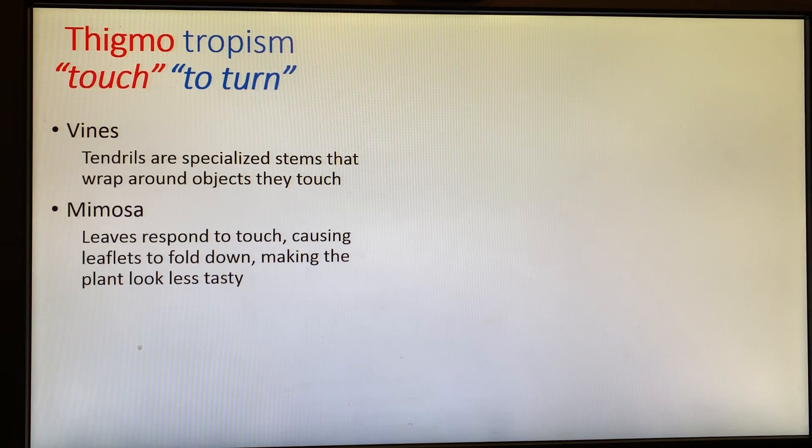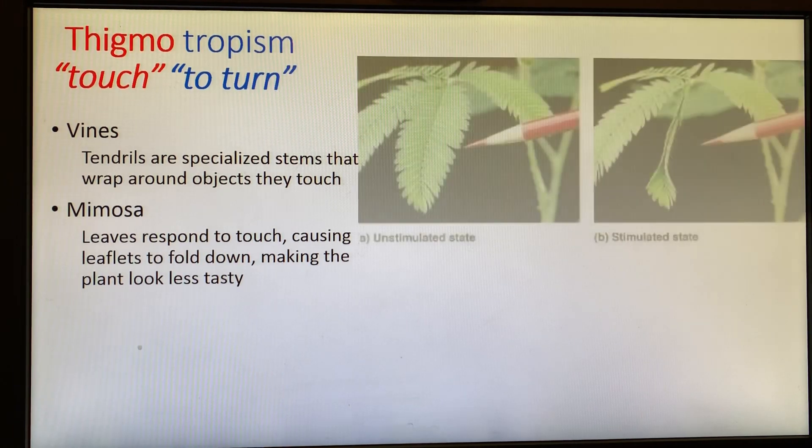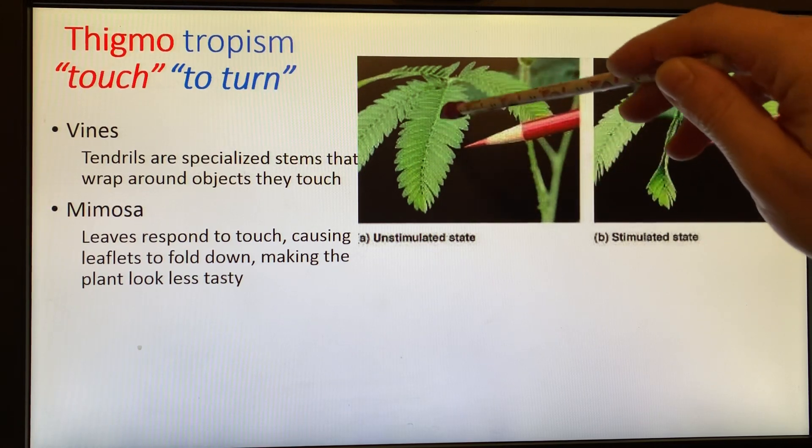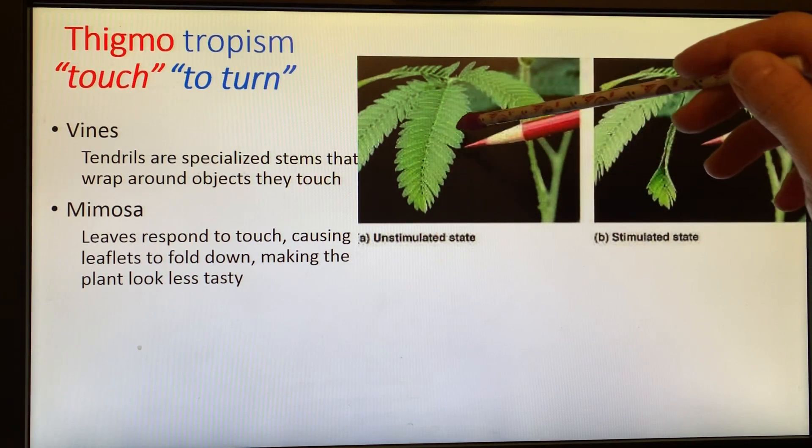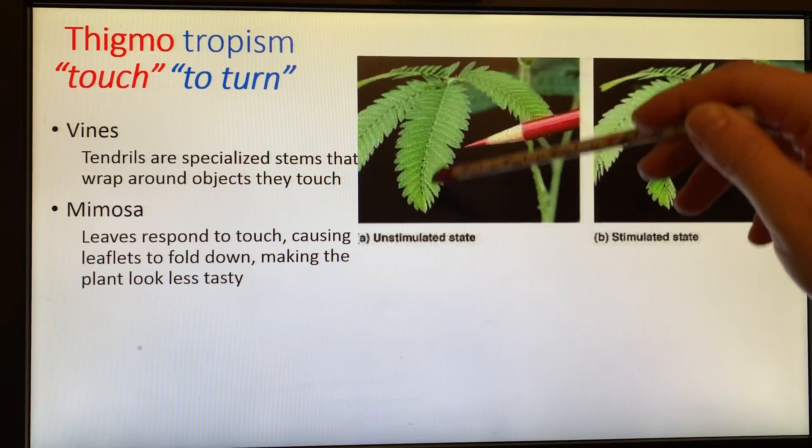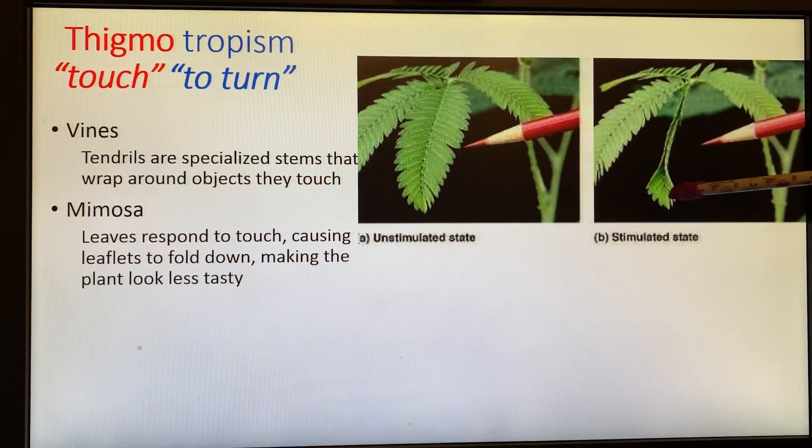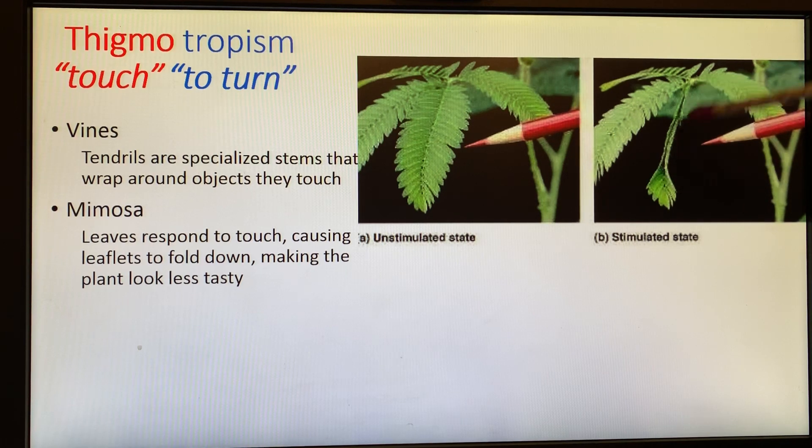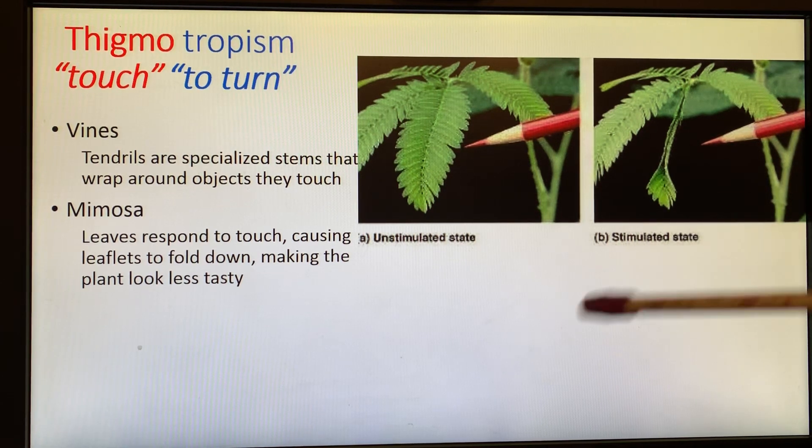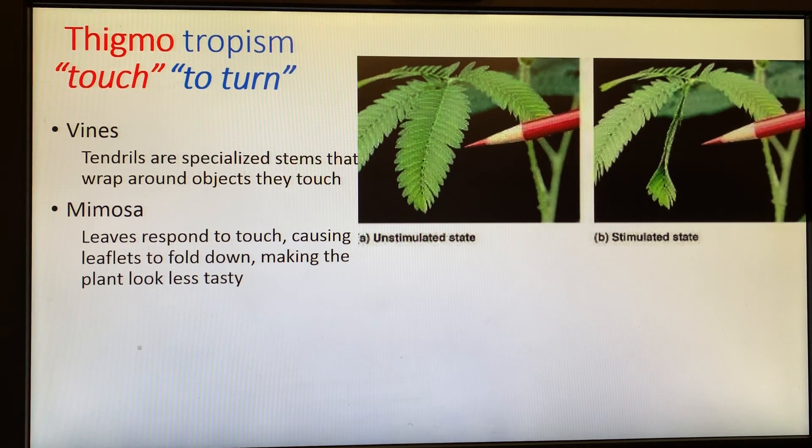Another example of thigmotropism is a mimosa plant. Mimosa plants respond to touch. The leaves here, these little tiny leaves are called leaflets. If you touch that plant anywhere along there, it responds and those leaflets bend in and they fold up and the leaf almost disappears. It's hard to say exactly what benefit this has, but it might look wilted, less tasty. It can kind of hide it amongst some other plants. So it's a defense mechanism for the plant.